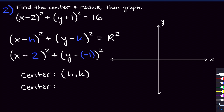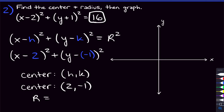Putting this all together, the center is (h, k). We do the opposite of what we see: the x-coordinate is not negative 2, it's positive 2, and the y-coordinate is not positive 1, it's negative 1. So the center is (2, -1). For the radius, we look at the other side of the equation — the 16, which is r squared. The square root of 16 is 4, so the radius is 4.